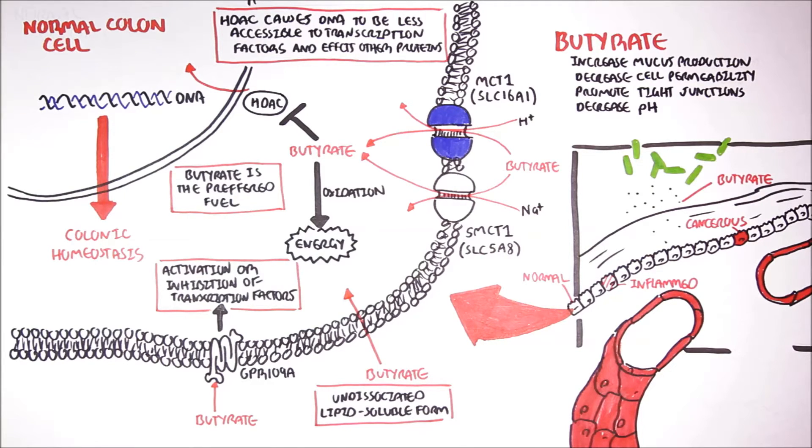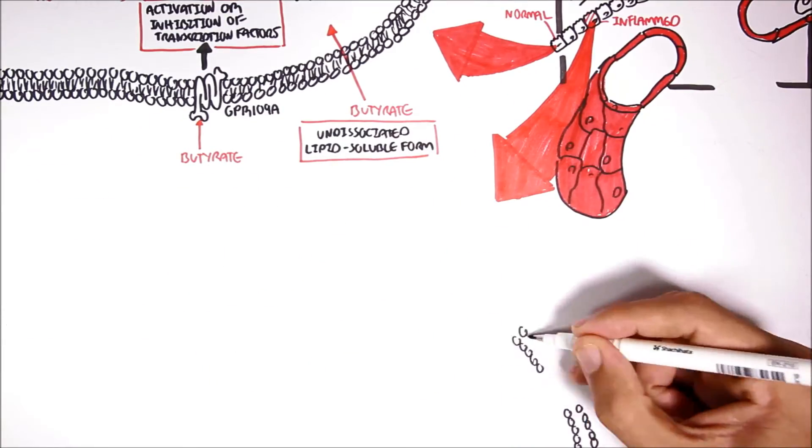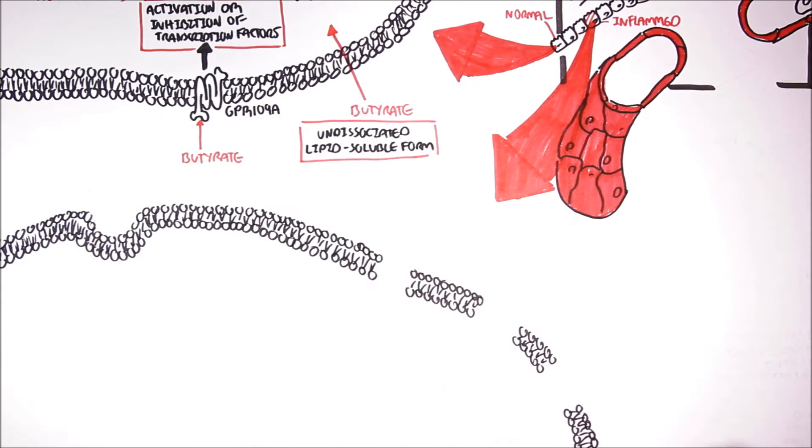The colon cells are permanently in close association with trillions of microbes and their products. Therefore, the colon cells must have some form of response to this potential challenge. So this is inflammation. Here we have an inflamed colon cell.